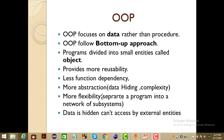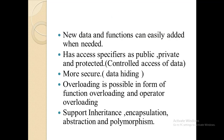OOP provides more abstraction — it hides data and complexity from a normal user. At the same time, it provides more flexibility by separating a program into a network of subsystems. Data is normally hidden from a user and cannot be accessed by external entities, thanks to access specifiers: public, private, and protected. We can easily add new data and functions to the code. It provides more security because data is hidden. OOP also provides function overloading and operator overloading, and it supports inheritance, encapsulation, abstraction, and polymorphism.